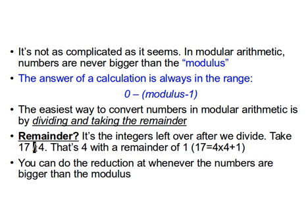Likewise, for minus 78 mod 9: the nearest multiple of 9 to minus 78 is minus 72 (8 times 9), which gives minus 6. We add another 9 to minus 6 and end up with 3. Remember: if n is negative, keep adding multiples of m until you get a positive number between 0 and m minus 1; if n is positive, keep removing multiples until you have a number between 0 and m minus 1.